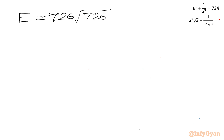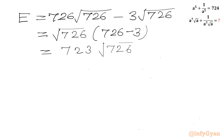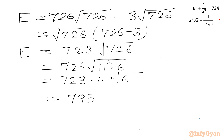So E = (√726)³ − 3·√726. Taking √726 common: E = √726·(726 − 3) = 723·√726. Now factoring 726 = 11²·6, so we get 723·11·√6 = 7953·√6. This is our final answer.